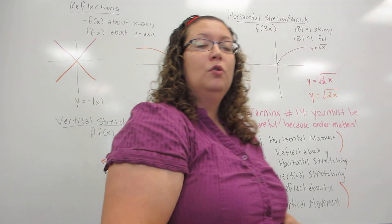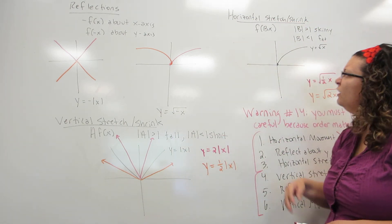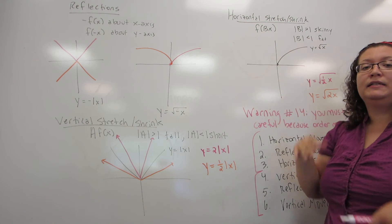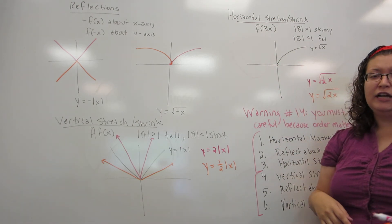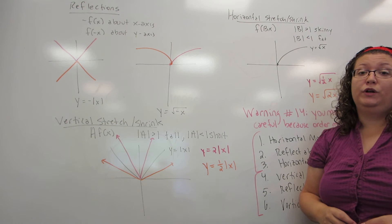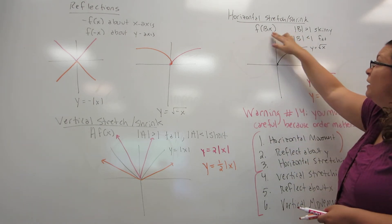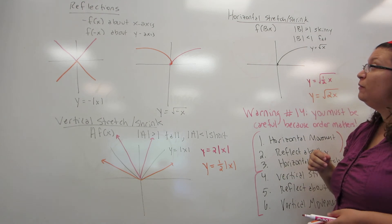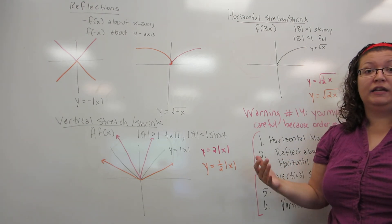Now, we're going to look at horizontal stretching and shrinking. This is where you multiply an equation by a number inside the main function. And just like when we did horizontal movement, it's opposite of what you will expect. So if I multiply it by a big number, it actually makes it skinnier. And if I multiply it by a small number, it will make it fatter.